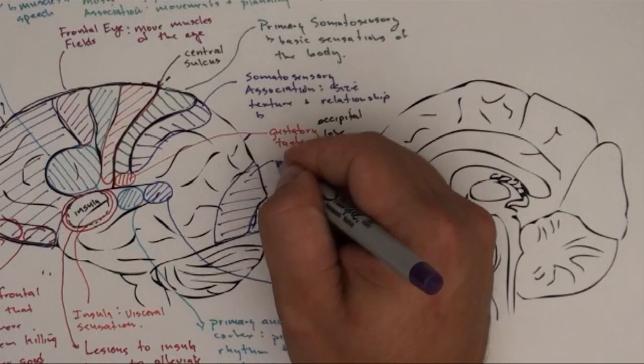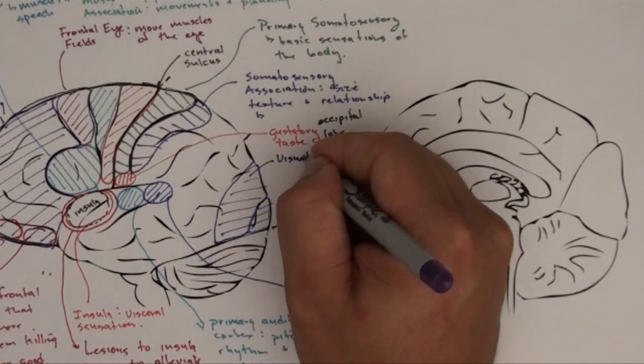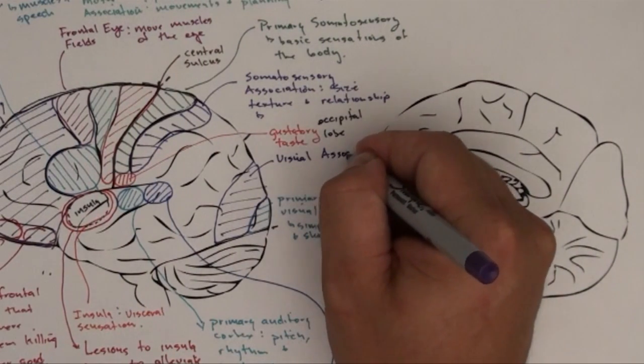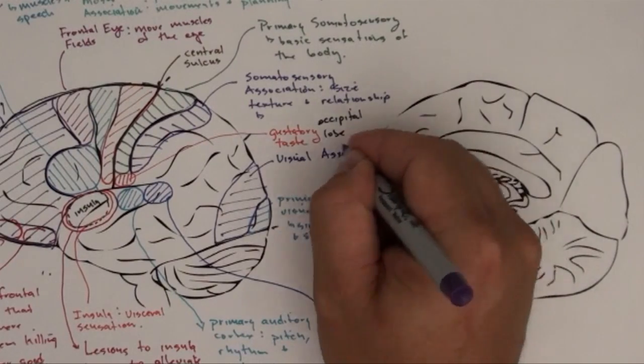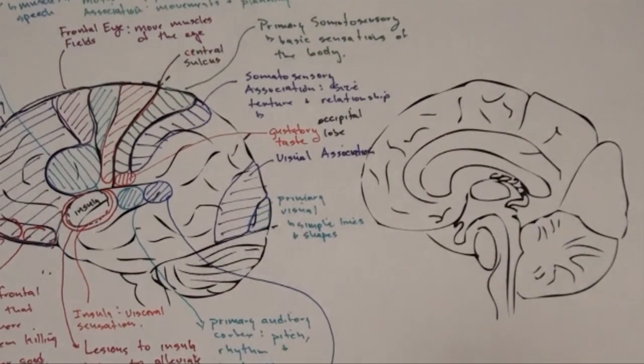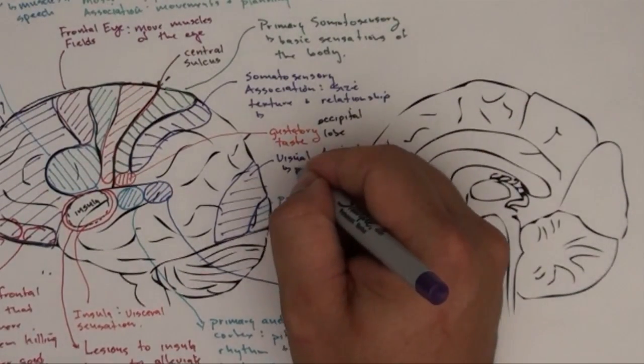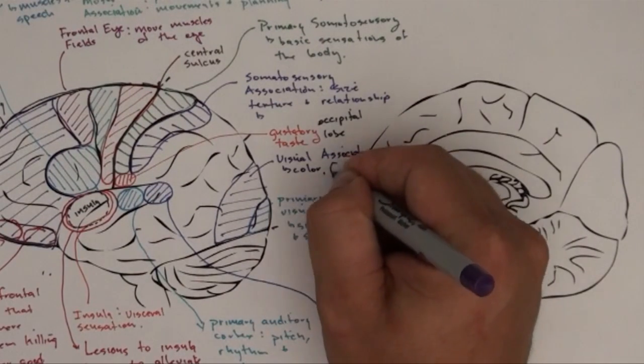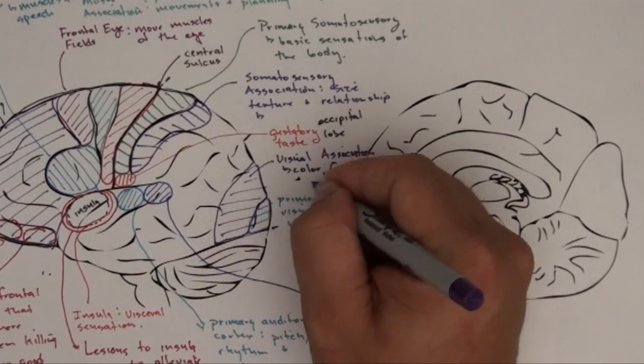This area is visual association, and this is going to see things like color, form, and movement.